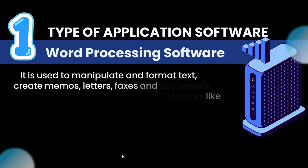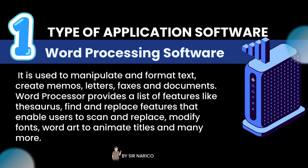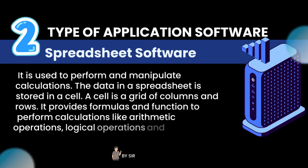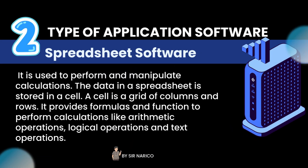Word processing software is used to manipulate and format text, create memos, letters, faxes, and documents. A word processor provides features like a thesaurus, find and replace features that enable users to scan and replace text, modify fonts, word art to animate titles, and many more.